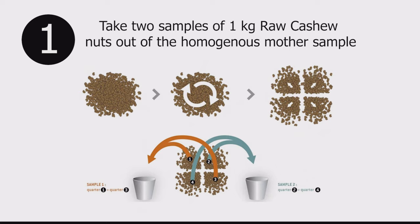To begin, prepare your mother sample of raw cashew nuts from different storage bags. Next, divide the mother sample into four piles. Sort piles 1 and 3 as sample 1, and piles 2 and 4 as sample 2.